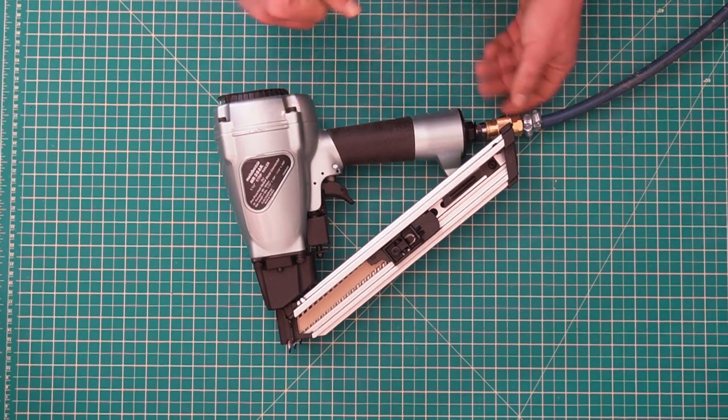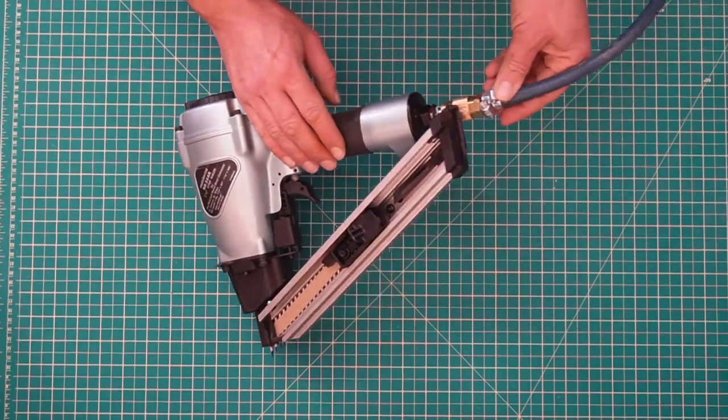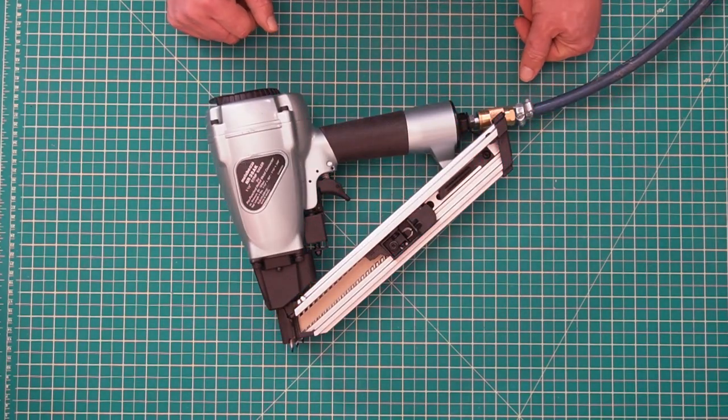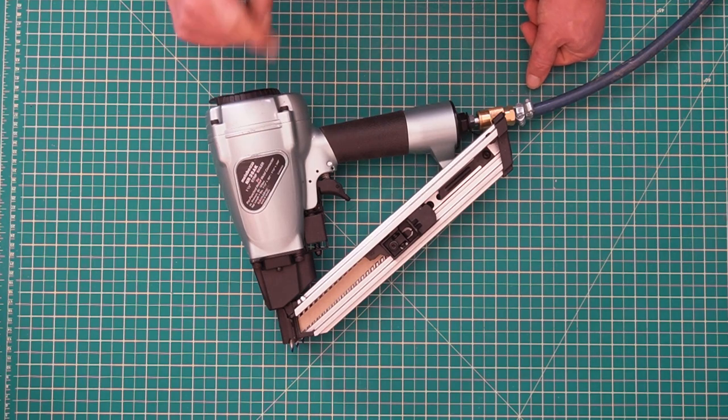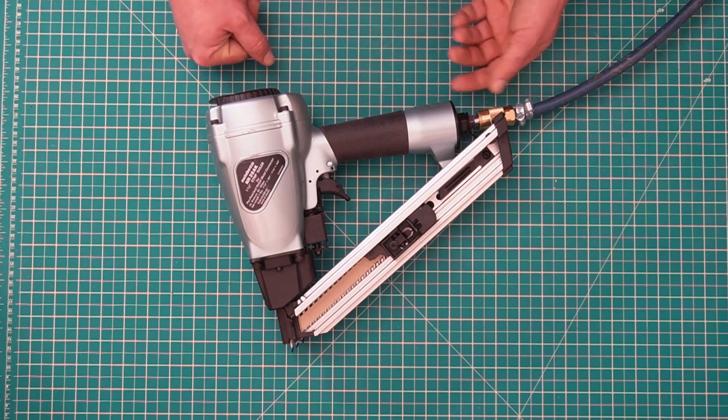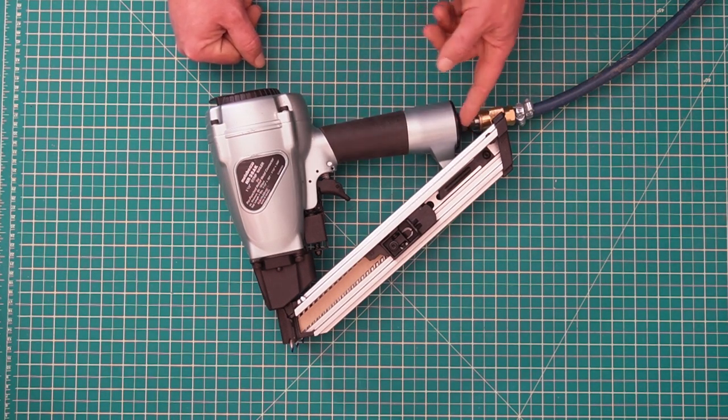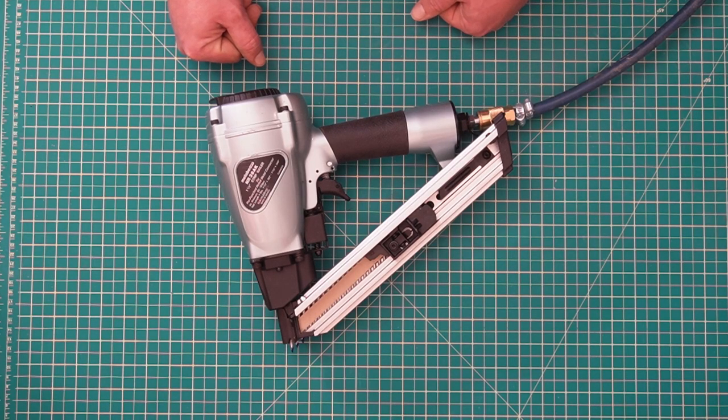One of the things that I was really shocked by is as you can see there's no rafter hook. How the hell are you gonna go and sell a metal connector nailer without a rafter hook included? Bostitch one definitely has one included. I'm gonna have to get one because these get hung on a rafter all the time. That's something that's really really missing.